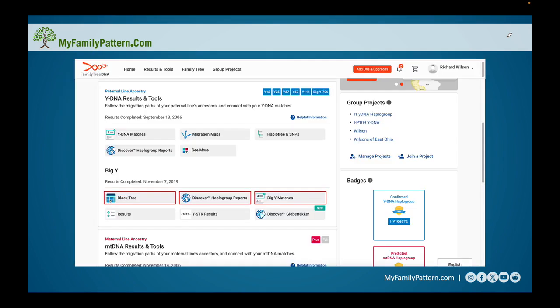So let's get started. When you're at the landing page for the Big Y, we're going to be focusing on the block tree on the left, the Big Y matches on the right, and in the center are those Discover Haplogroups where the time tree and scientific details are found.